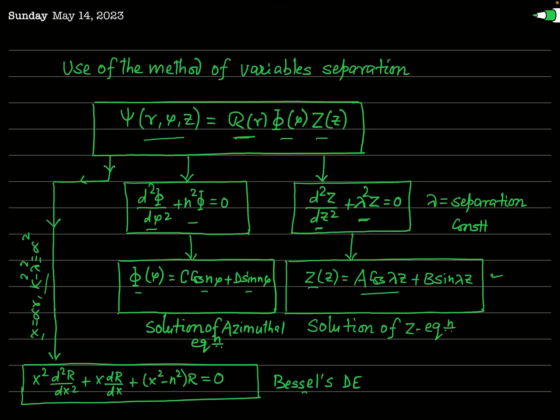Note that this x is a variable related to r; do not confuse it with the x-coordinate of the Cartesian coordinate system. When these two transformations are applied, the equation for R becomes: x²·d²R/dx² plus x·dR/dx plus (x² minus n²)·R equals zero.